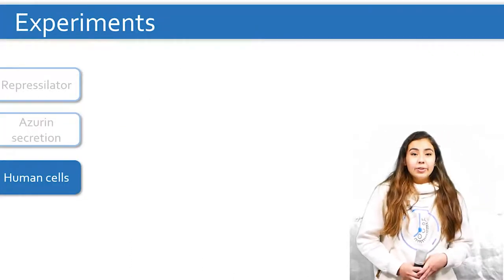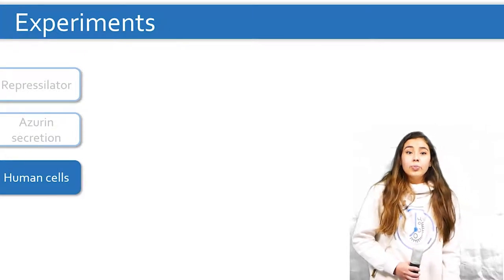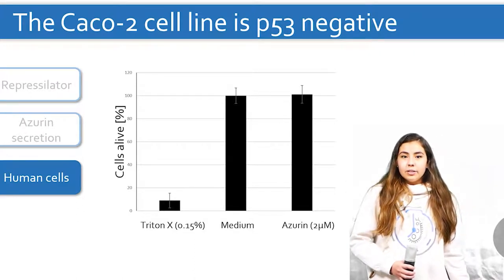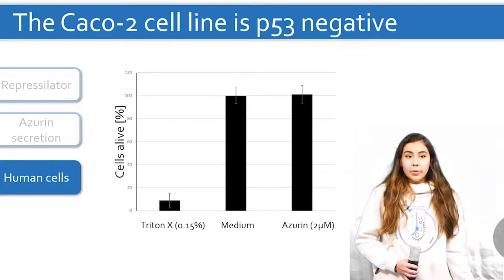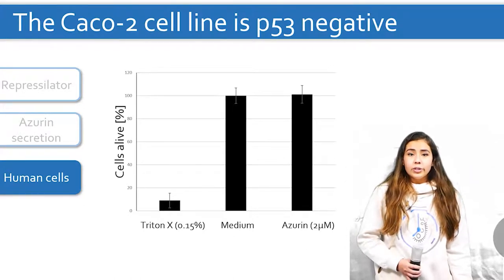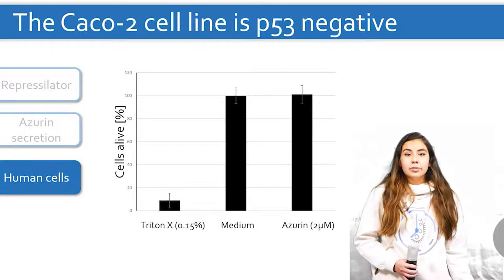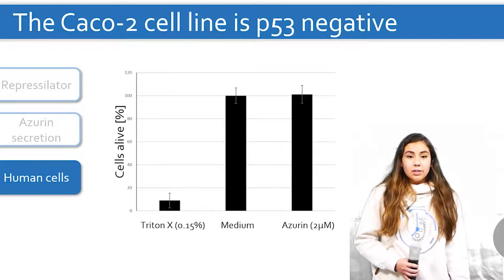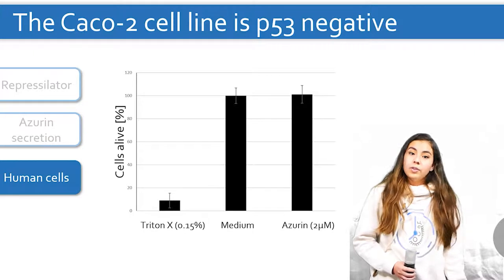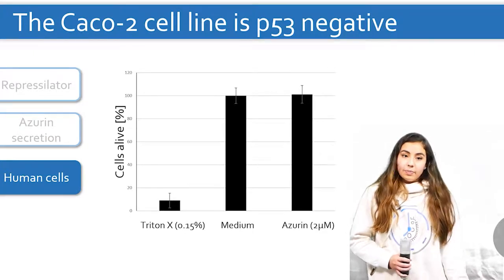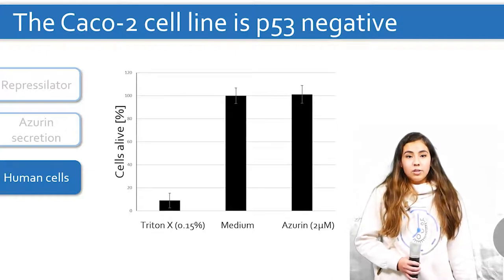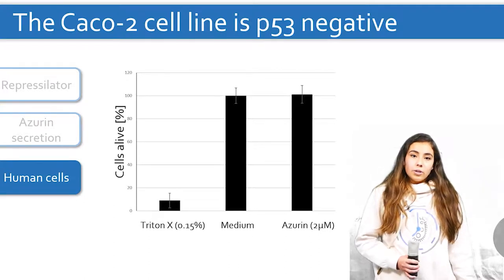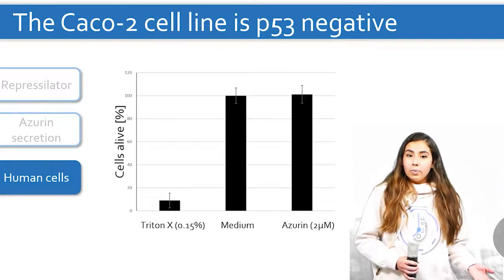So now that we got our azurin expressed and secreted, we moved on to test its effect on our colorectal cancer cells. Unfortunately, as you can see in this plot, azurin doesn't seem to kill the cancer cells as we expected. This was surprising, and therefore, we dug deeper into the literature regarding this cancer cell line and discovered that it was actually mutated for the p53 gene, which means azurin is not able to bind to the p53 protein and then have an effect. In the future, we would need to test it on a different cell line with a normal p53. So to continue to explore our project's potential, we turn into an in-silico model to get more answers.